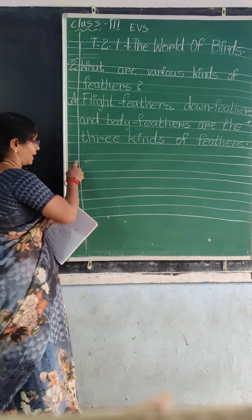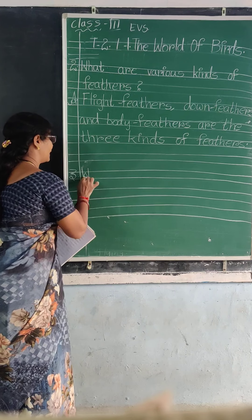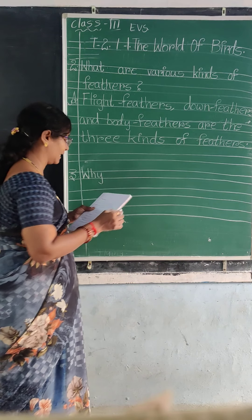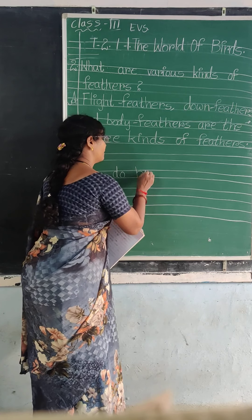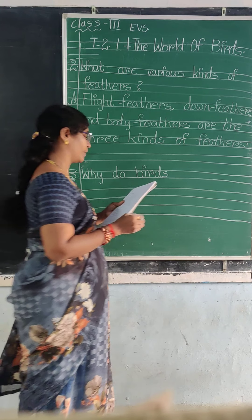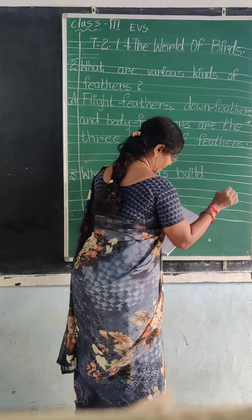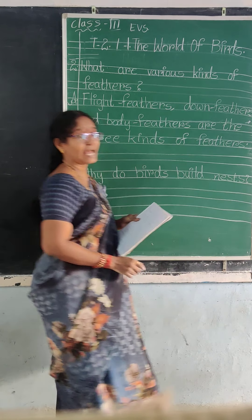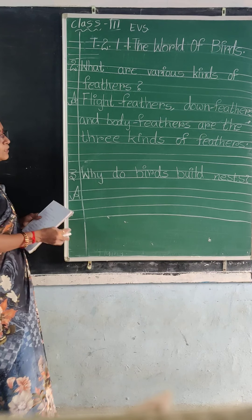Okay, next. Write 3 in the margin. Question 3: W-H-Y [finger gap] D-O [finger gap] B-I-R-D-S [finger gap] B-U-I-L-D [finger gap] N-E-S-T-S. Why do birds build nests?